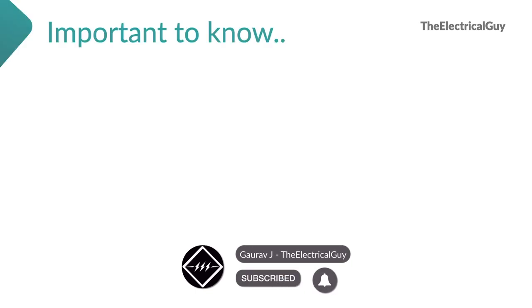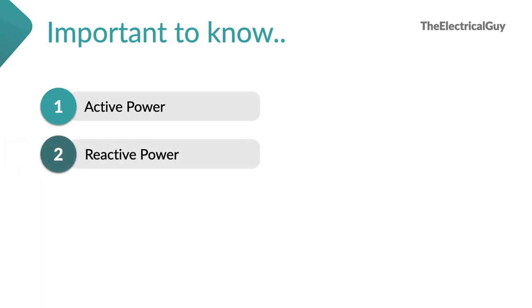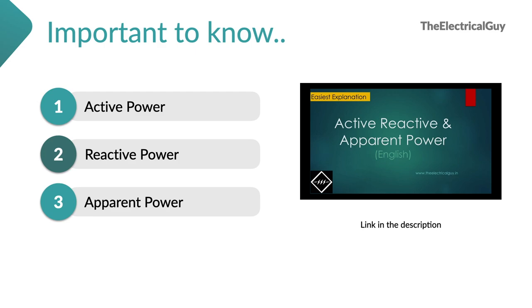Before you understand the different types of electrical load, it is important that you understand the 3 different powers — that is active power, reactive power, and apparent power. I will recommend you to watch my video on that first, the link for which is given in the description of this video. Understand those powers and then come back here, as that will make things even more easy to understand.